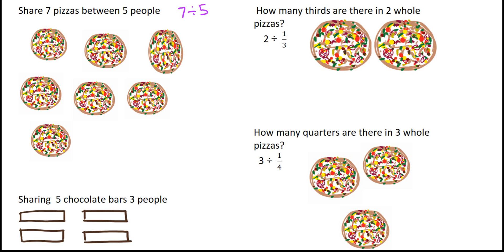When we're dealing with fractions we generally want to talk about sharing, and an example is really good to show sharing with fractions. So I've got 7 pizzas shared between 5 people. If I take one pizza and share it amongst 5 people, then each person would get one fifth. If I go ahead and share all the pizzas amongst 5 people, you can see that each pizza will be divided into fifths, and then each person would get one fifth of the 7 pizzas.